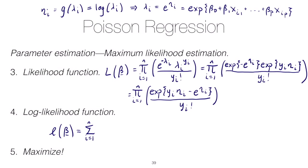So this should simplify pretty nicely. We should end up with the sum of y i times eta i minus e to the eta i minus the log of y i factorial.